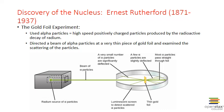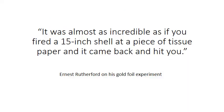Here's what he found: most of the particles went straight through the gold foil and were detected on the opposite side with no scattering. A few of the particles were slightly deflected, and a very few were significantly deflected — so much so that they almost came straight back towards the alpha particle source. It was this last result that really surprised him. As he later reflected: "It was almost as incredible as if you fired a 15-inch shell at a piece of tissue paper and it came back and hit you."